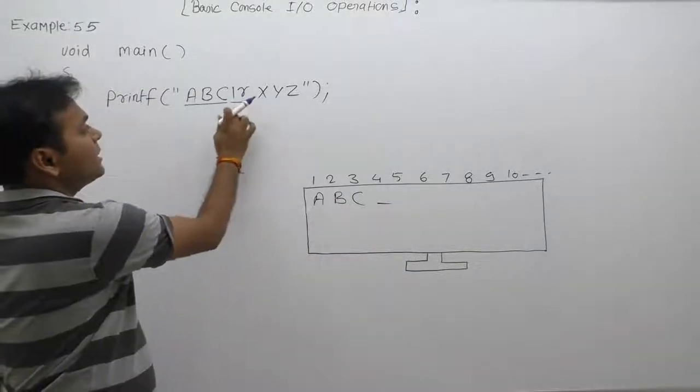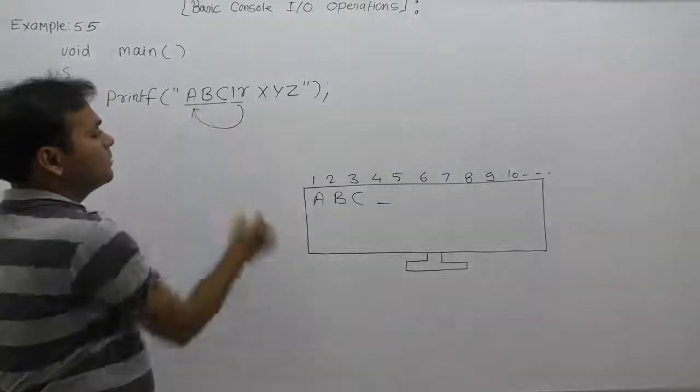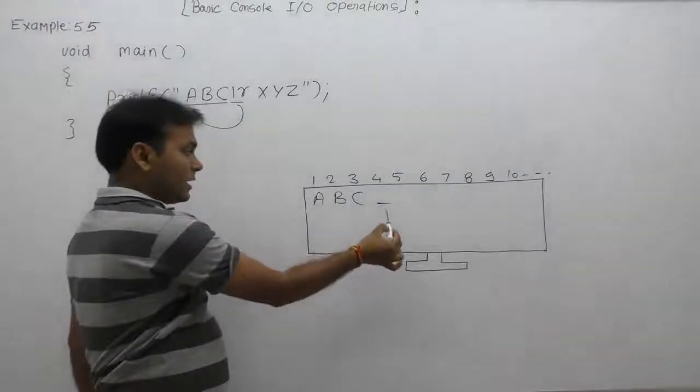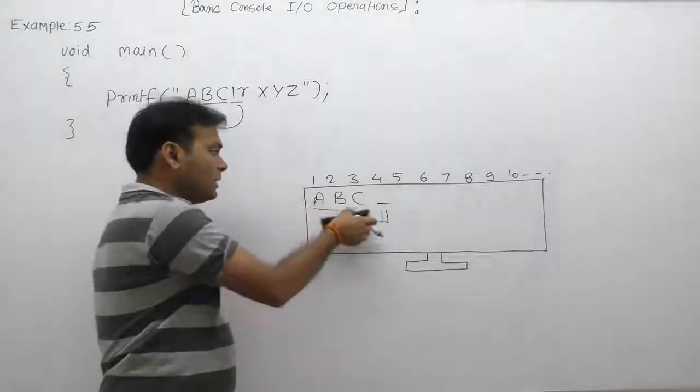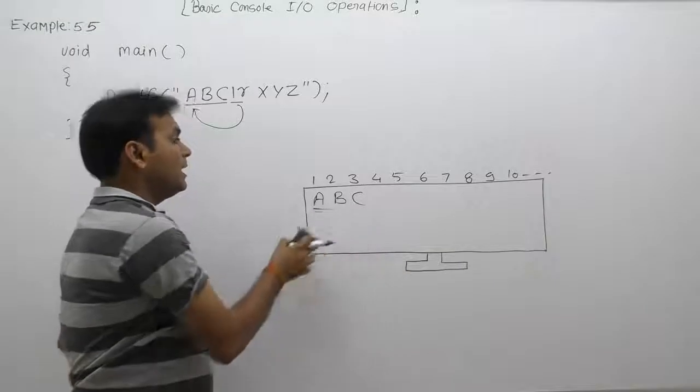And according to slash R, again cursor will be moved on the first character or first position of the current line. Now cursor will be available inside A.